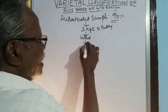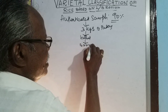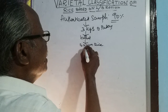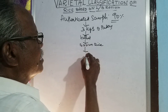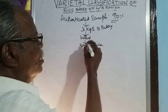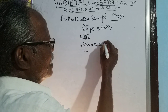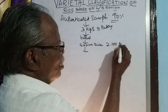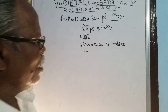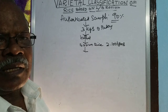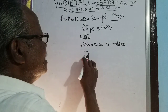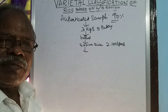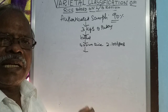The paddy is hulled, and the rice obtained is called brown rice — brown in color. For 3 kg of paddy, approximately 2 kg 100 grams of brown rice may be obtained. This brown rice is put into a sample divider.